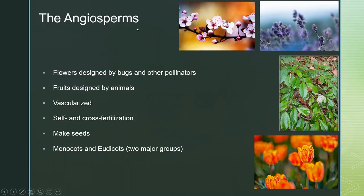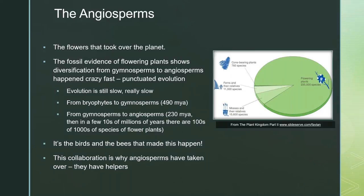Angiosperms have complex vascular tissue and can self- or cross-fertilize. A lot of plants are self-infertile — if you're pollinating some garden plants you have to hand-pollinate them; some pawpaws are self-infertile. Angiosperms make seeds, and there are two major groups: monocots, where one leaf comes out at the seedling stage — things like corn and grass — and eudicots, formerly called dicots, which have two or more leaves in that first seedling stage.